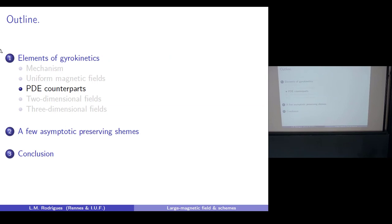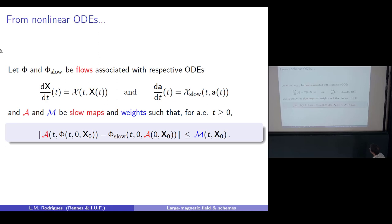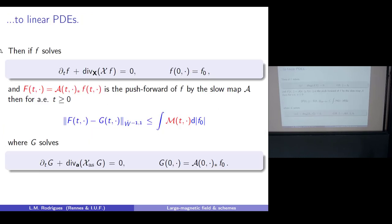I said we need almost no PDEs. This is the only part where I discuss the fact that if we are just considering ODEs, we can translate this to the statistical mechanics level. You start with a flow for the ODE, a reduced flow for the slow part, and a slow map that identifies the slow coordinates. From an estimator showing that the slow part of the full dynamics is close to following the reduced flow, you get a bound depending on initial data and time.